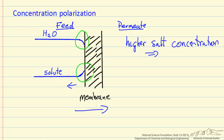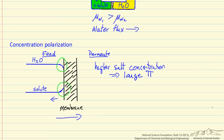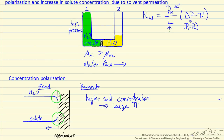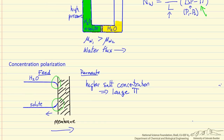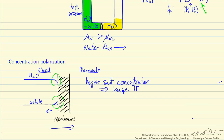A higher salt concentration means that we have a larger osmotic pressure. Osmotic pressure increases as salt concentration increases, which means if we look at our equation, if we increase the osmotic pressure, then we've decreased the driving force. So concentration polarization decreases the driving force during reverse osmosis, as well as other membrane processes.